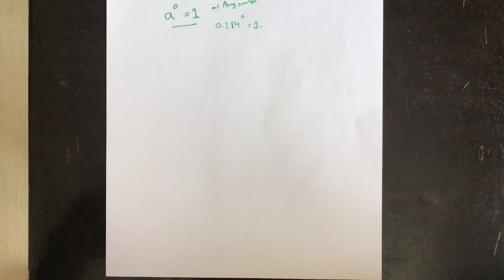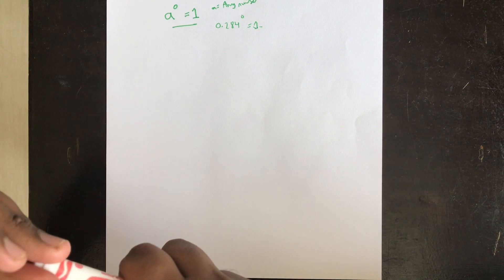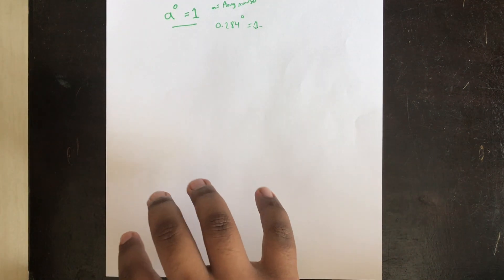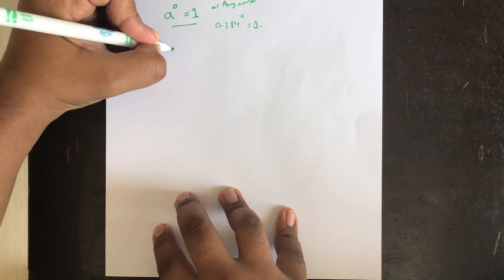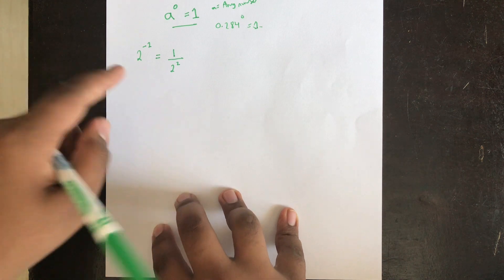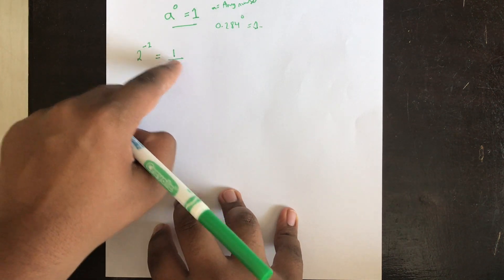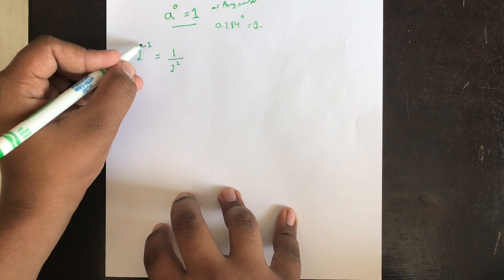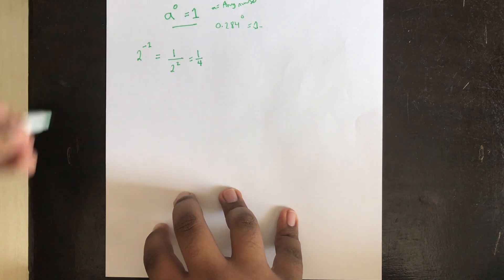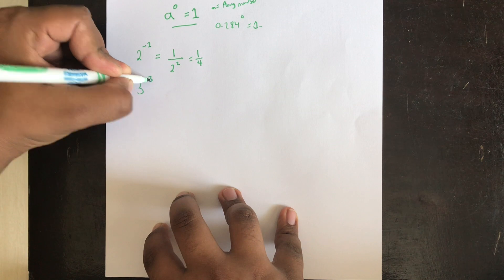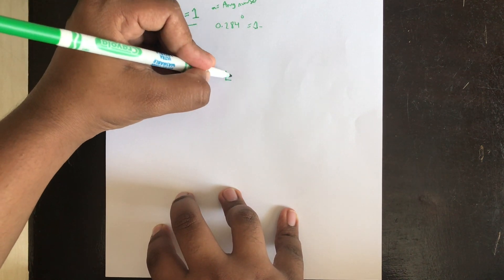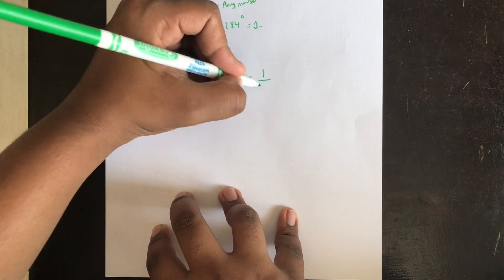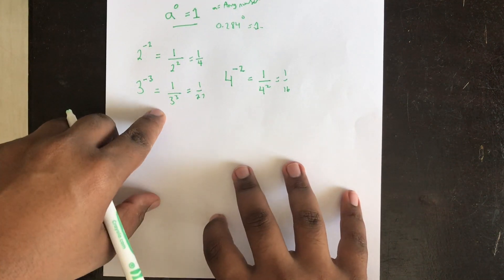The next formulas are defined by definition. If you have something like 2 to the power of negative 2, this is the same as 1 over 2 to the power of 2. The negative sign makes it a fraction, so this equals 1 over 4. Similarly, 3 to the power negative 3 is 1 over 3 cubed, which is 1 over 27, and 4 to the power negative 2 is 1 over 4 squared, which is 1 over 16.